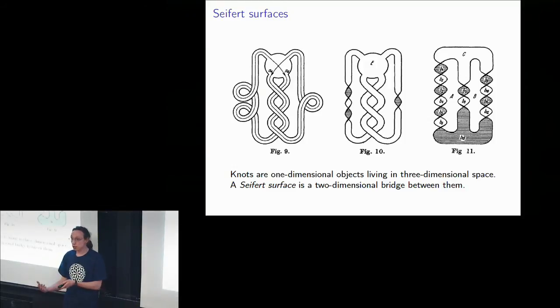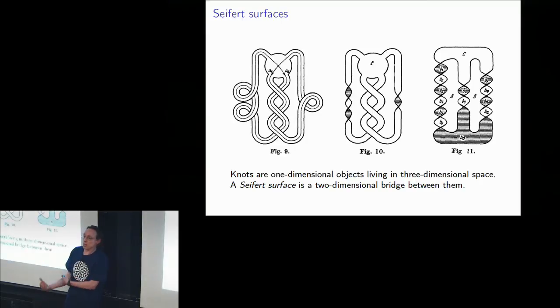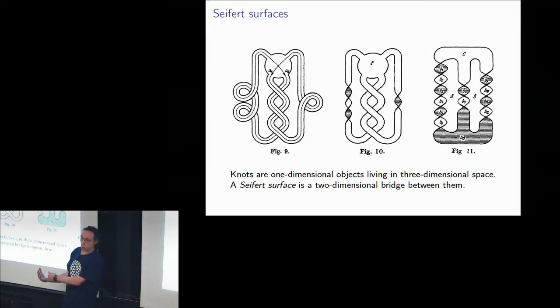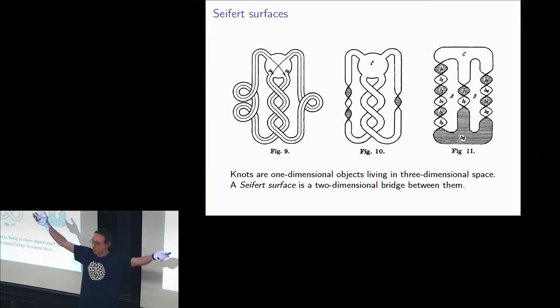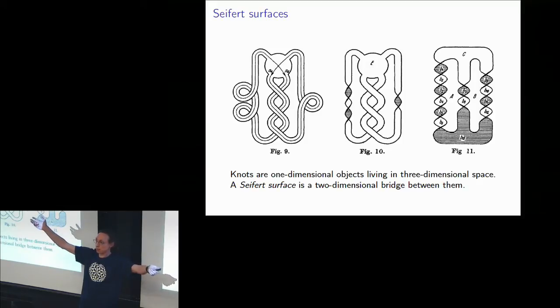The reason why Seifert surfaces are so cool is because they connect the knot — which is a one-dimensional thing — with its ambient space, which is three-dimensional. Now we're going to do this for torus knots.